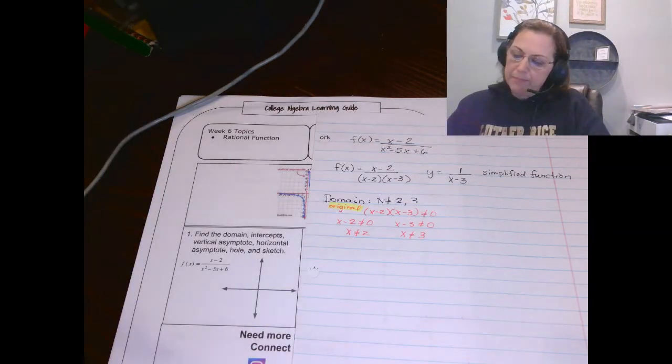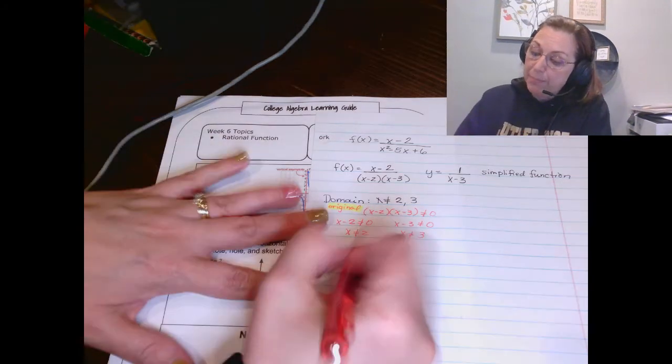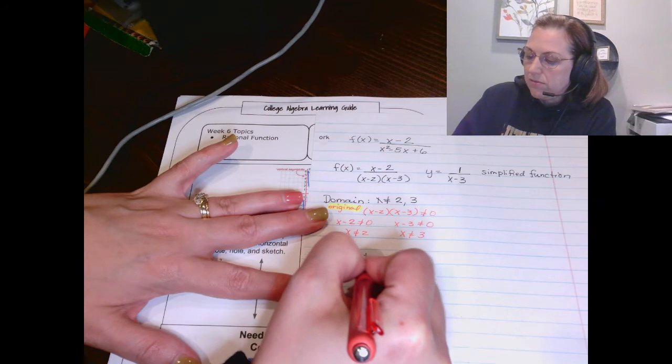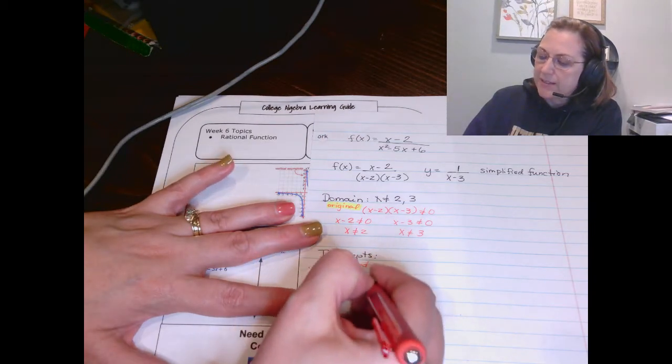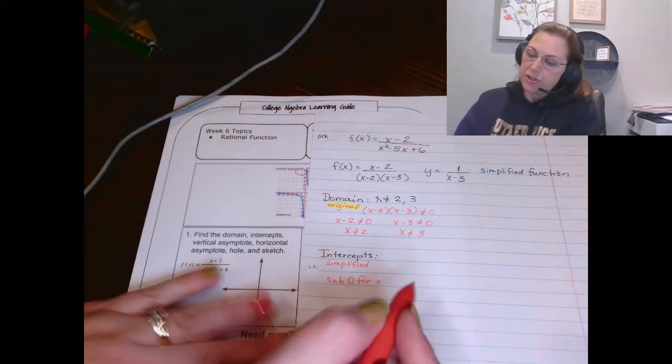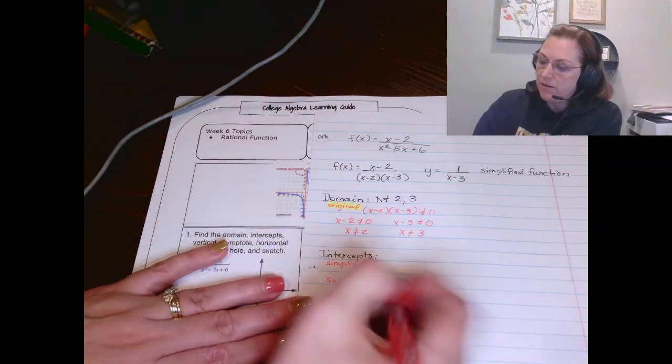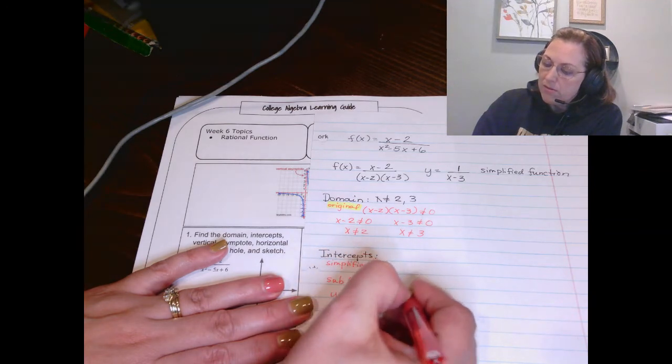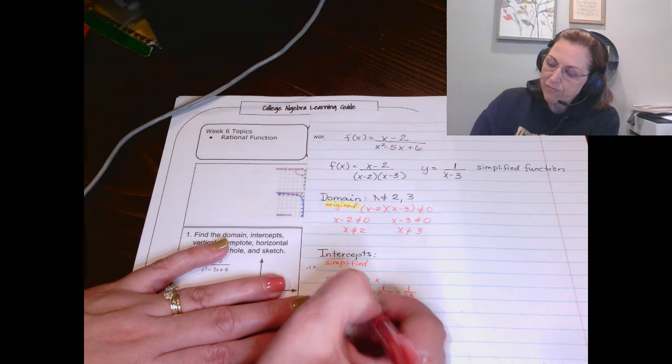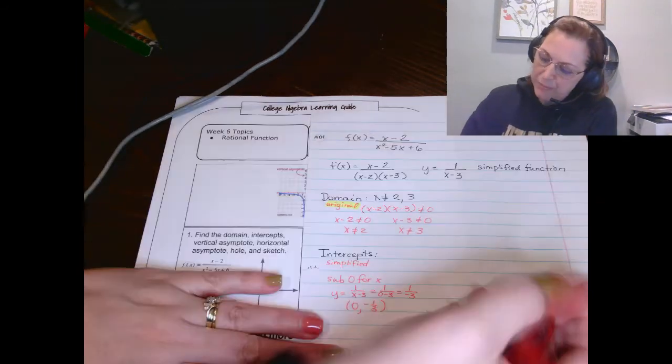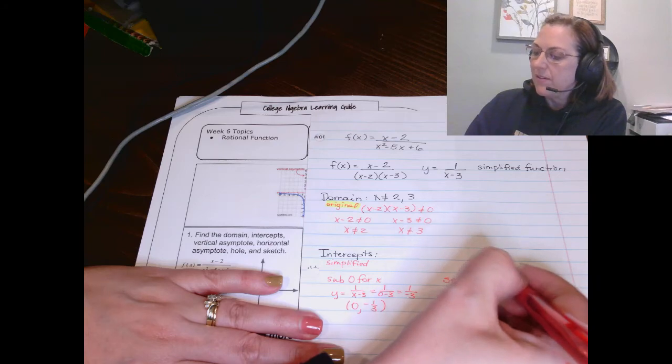Intercepts. Intercepts come from the simplified function. So it's got to come from the simplified function. And you've got two things to do. The first thing is sub 0 for x. So take your simplified function, y equals 1 over x minus 3, and put in a 0 for that x right there. That tells you you have a y-intercept of negative 1 third. Second thing to do, again in the simplified, set the numerator equal to 0.